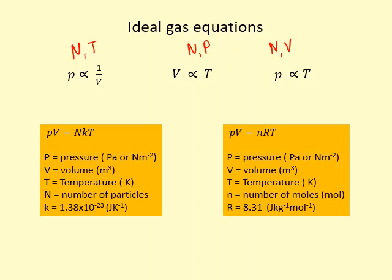They come in two forms depending on what you're looking for. If you're looking for number of particles or moles, they both have a different constant. Here you have the Boltzmann constant, and then here we have the gas constant.